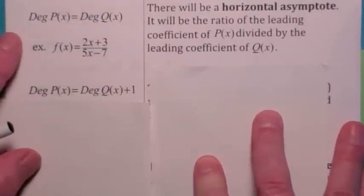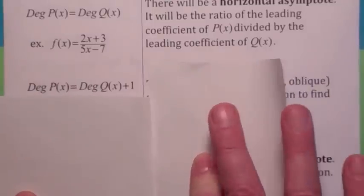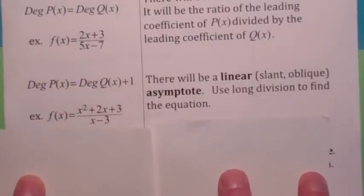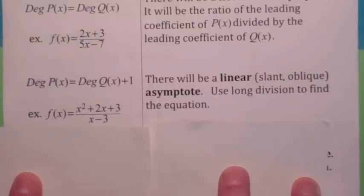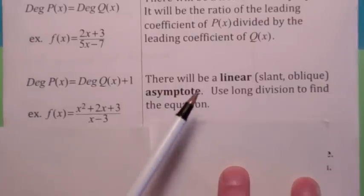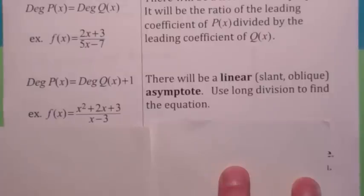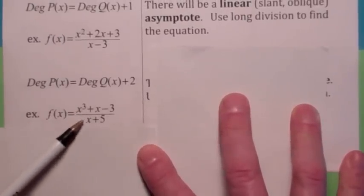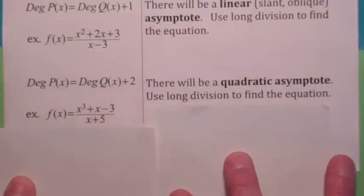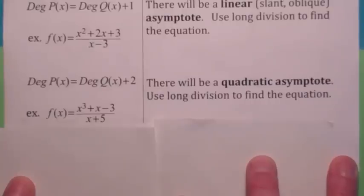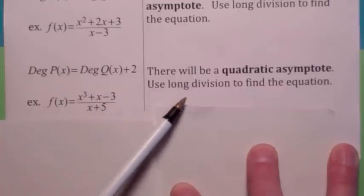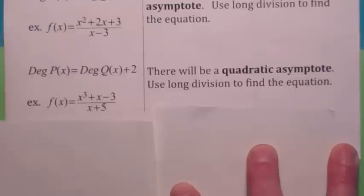The third case: what if the degree of the numerator is bigger than the degree of the denominator? Suppose the degree of the numerator is 1 more — the top has degree 2, the bottom has degree 1. The end behavior means the y-values are not getting close to a horizontal line; they're going to get close to a linear function. This is called a slant asymptote or oblique asymptote, and the way you find it is to use long division. If the numerator's degree is 2 more than the denominator's, you get a quadratic asymptote — and you can see the pattern from there.